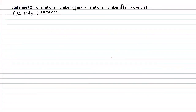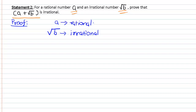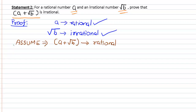Now let's move to the second statement. The second statement states that for a rational number a and an irrational number √b, we have to prove that a + √b is irrational — that is, the sum of a rational number and an irrational number is irrational. From the given, a is rational and √b is irrational. Let's assume that a + √b is rational.